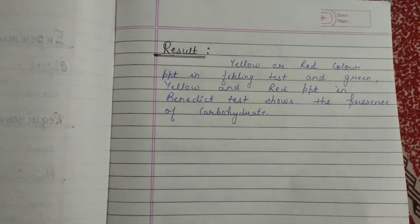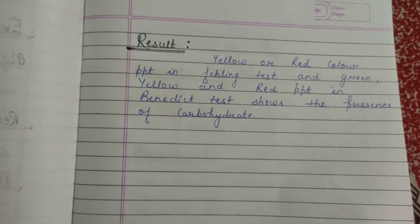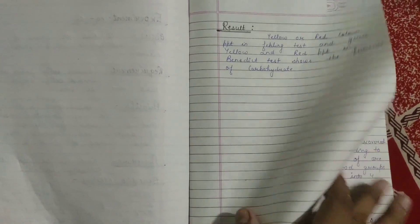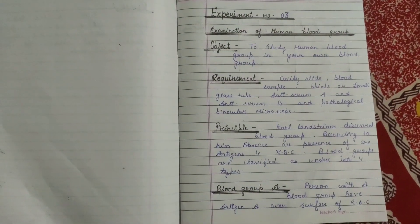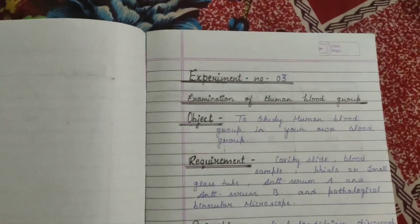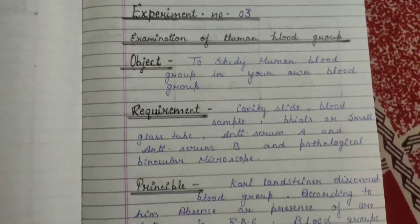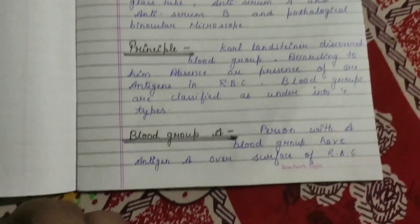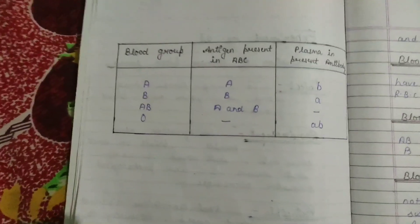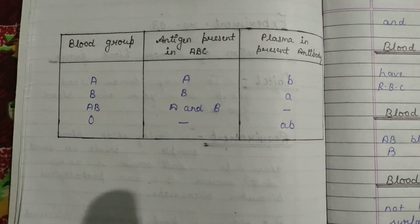You can download the PDF of this file from the description of this video. Then there is experiment number three: examination of human blood groups. Here it is — you can see this figure that you will make.